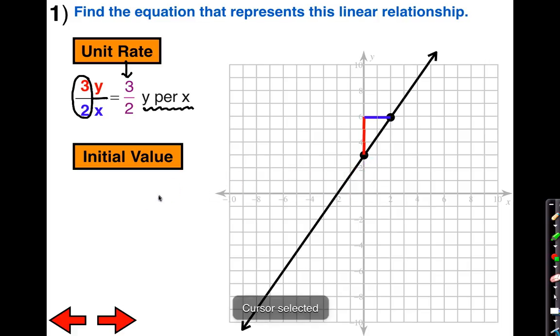The next thing we're going to look for is our initial value. Let's jump back to 7th grade. Before, in order for it to be a proportional relationship, it would have to be linear and it would have to go through the origin.